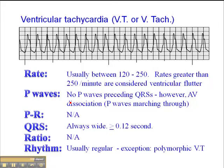When you have someone in VTAC, they can present anywhere along the clinical scale. Some patients will be perfectly stable and asymptomatic. Some will present with shortness of breath and chest pain. Others will present hemodynamically unstable and are candidates for electrical therapy. Others still will present in full cardiac arrest, pulseless and apneic, requiring full ACLS cardiac arrest management.